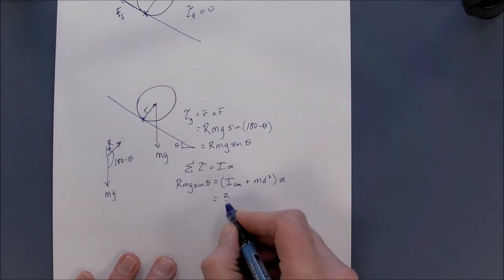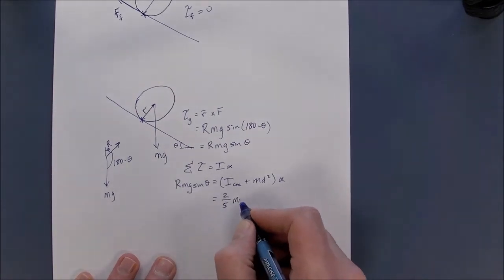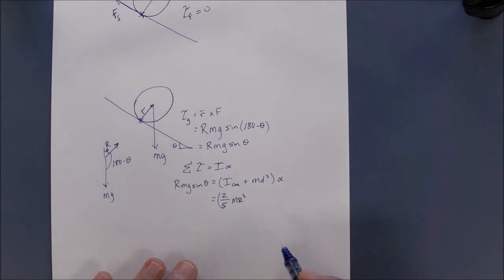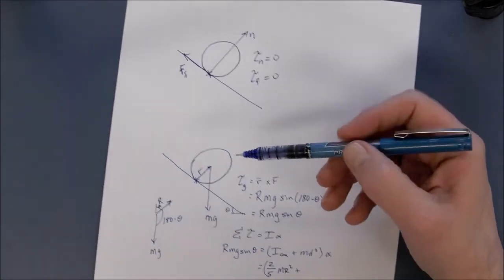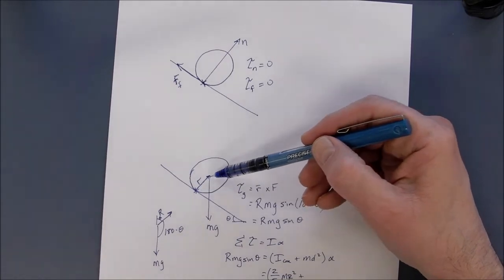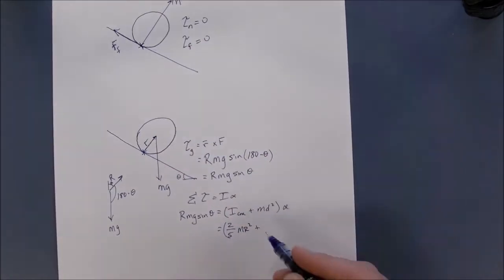And I_CM, the AP, the question tells us it's two-fifths MR squared. And the D here is the distance from the pivot to the center of mass, which is just R.